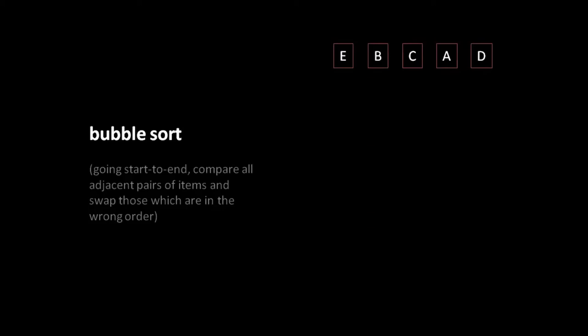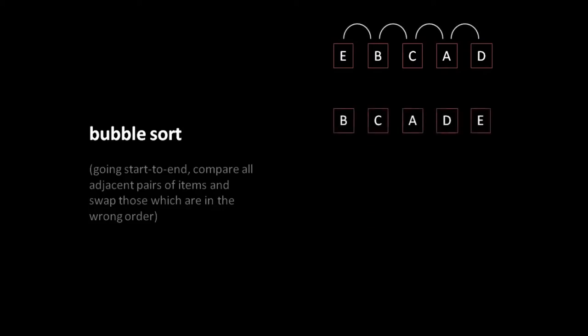The general strategy of bubble sort is that we work from the start to the end of the list, comparing each adjacent pair of items and swapping those which are in the wrong order. Here we have our unsorted list E, B, C, A, D — properly sorted it would be A, B, C, D, E. In our first pass, we compare E and B: E is not less than B, so we swap them. That puts E in second position, which we compare against C — those are out of order, so we swap. Then E in third position compared to A — out of order, we swap. Finally, E compared to D — again out of order, so we swap. After the first pass the list is still not sorted, but the largest element, E, is now in its final position.